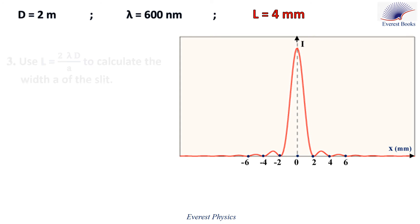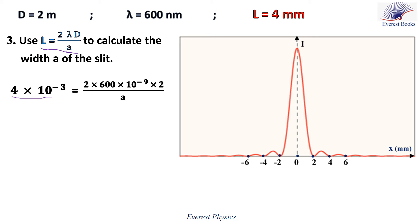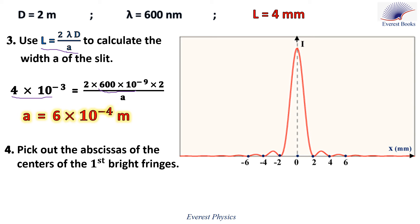Let's move to part three: use the expression of the linear width of the central bright fringe in order to calculate the width a of the slit. Let's replace L by 4 millimeters, or 4 times 10 to the power minus 3 meters, and lambda by 600 nanometers, or 600 times 10 to the power minus 9 meters. Then a equals 6 times 10 to the power minus 4 meters.